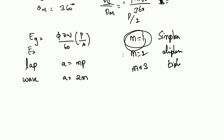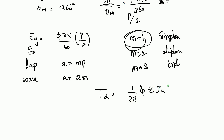The motor torque formula is 1 by 2 pi into phi, Z, I_A, into P by A, where P is the number of poles and A is the number of parallel paths.